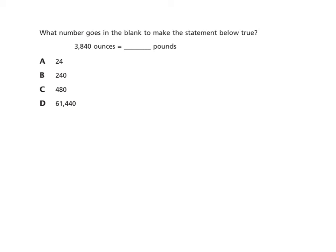What number goes in the blank to make the statement true? Three thousand eight hundred forty ounces equals blank pounds. We should know that ounces are smaller than pounds, and sixteen ounces equals one pound — you're expected to know that in New York State since it's no longer on the reference sheet. We could also say one ounce equals one-sixteenth of a pound. Since ounces are smaller, we'll have fewer pounds — divide by sixteen.